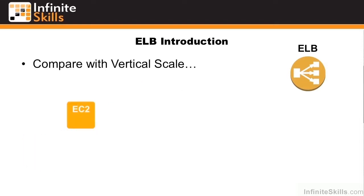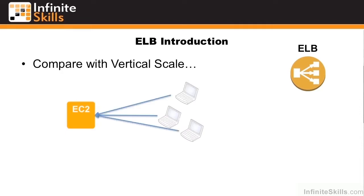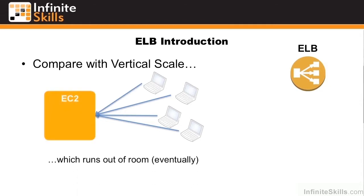If you compare that with vertical scale, here we have a single EC2 instance. When users hit that instance, we can add more resources to that single instance, but you eventually run out of RAM, CPU, and so forth in a single instance.